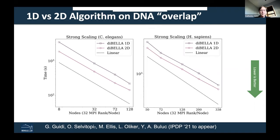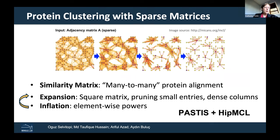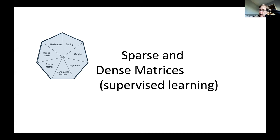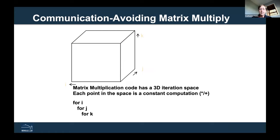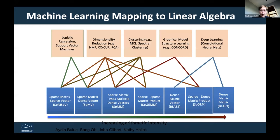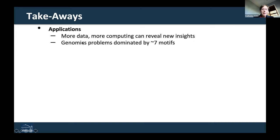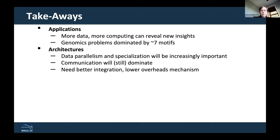We also do both unsupervised and supervised learning, building on these communication-avoiding ideas for sparse matrices that come up in graph neural network algorithms. Let me go to my final takeaways. From the applications perspective: more data and computing can give you better science, and these genomics problems are dominated by seven motifs, most of which overlap with the National Academies report on the seven giants of big data. From the architectural perspective: we're seeing a lot more data parallelism and starting to see some specialization.